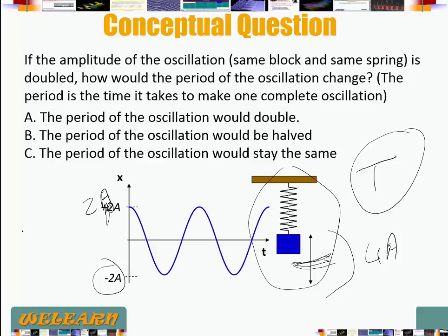Now remember the expression for the period for a spring mass system. T is equal to 2π square root of m over k. k is the spring constant. T is equal to 2π square root of m over k. Notice here there is no amplitude there.